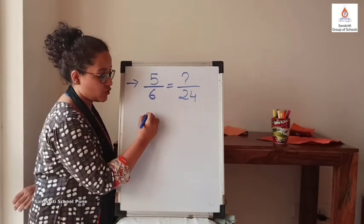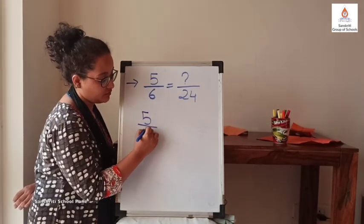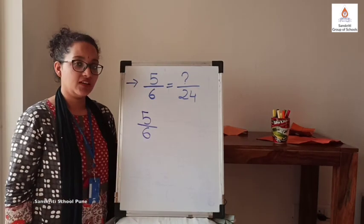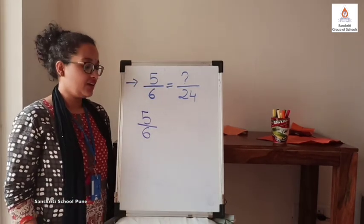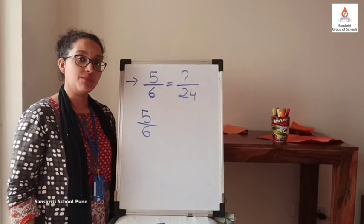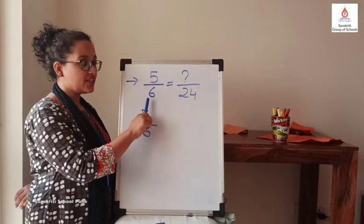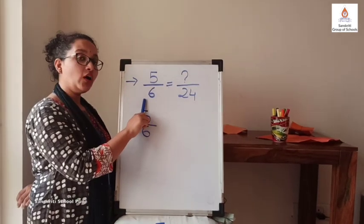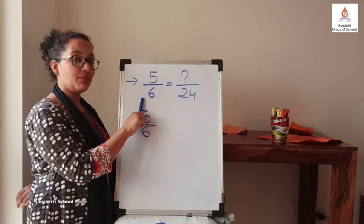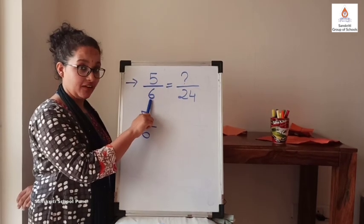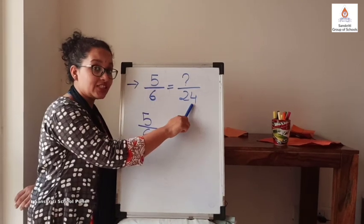Now, let us take this fraction. Before multiplying numerator and denominator by same number, look at here. What do you think? Which number should be multiplied by 6 here in order to get 24?